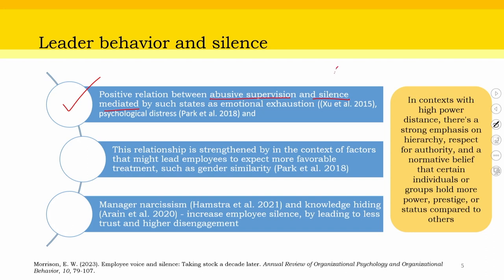This relationship is strengthened in the context of factors that might lead employees to expect more favorable treatment — such as gender similarity — where there is some level of favoritism or partisan behavior. When looking into aspects like manager narcissism and knowledge hiding, these increase employee silence by leading to less trust and higher disengagement. When your manager is narcissistic — prone to playing dumb, evasive hiding, rationalized hiding — these aspects increase employee silence because you feel there is no point in telling anything to the manager.